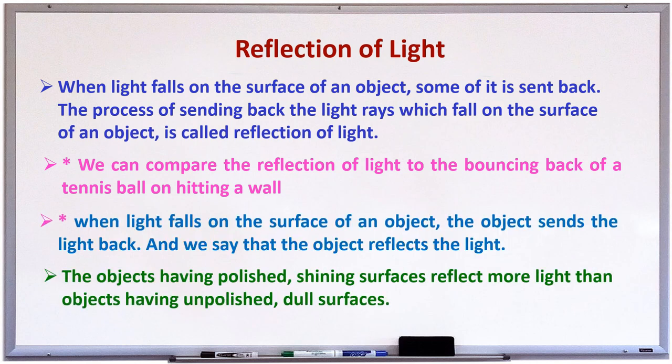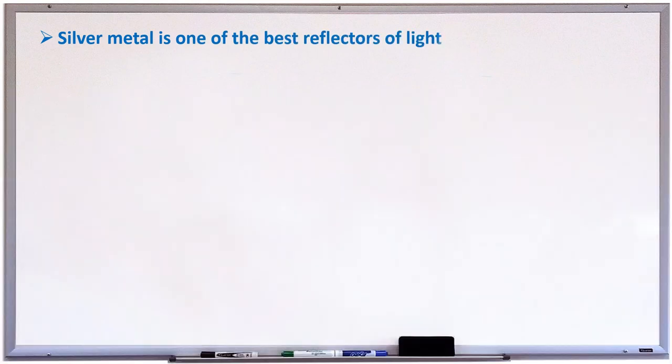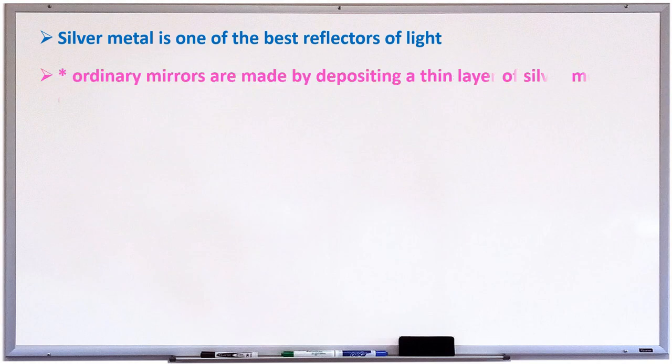The objects having polished, shining surfaces reflect more light than the objects having unpolished or dull surfaces. Children, silver metal is one of the best reflectors of light.